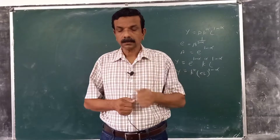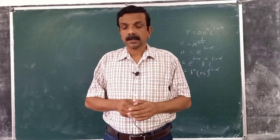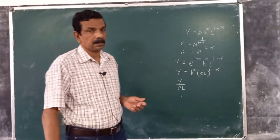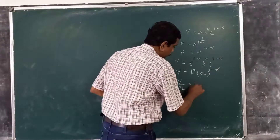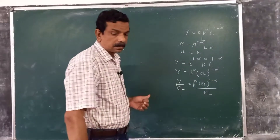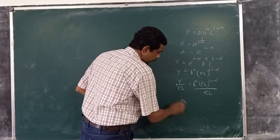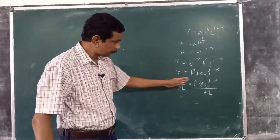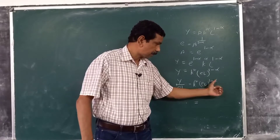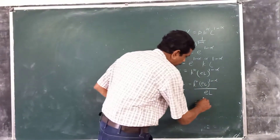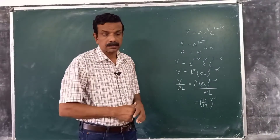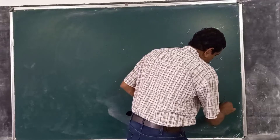Now, to convert this into per worker terms, we divide y by eL — not y by L, but y by eL. So it is equal to k raised to alpha times (eL) raised to 1 minus alpha divided by eL. That gives y by eL equal to k by eL raised to alpha.